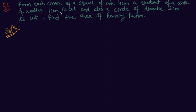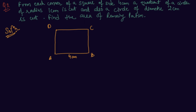This question states that from each corner of a square — let me draw a square and name it A, B, C, D — the side is 4 centimeters. A quadrant of a circle of radius 1 centimeter is cut from each corner. Quadrant means one fourth of a circle. Also, a circle of diameter 2 centimeters is cut from the center. We have to find the area of the remaining portion.